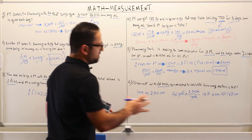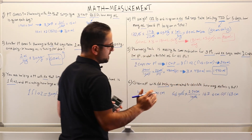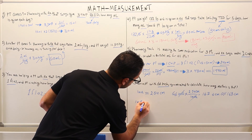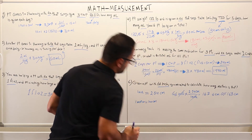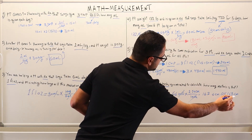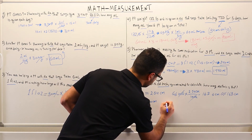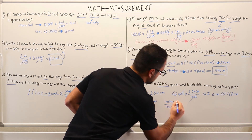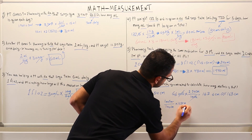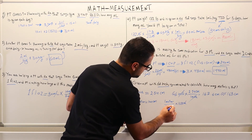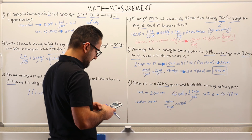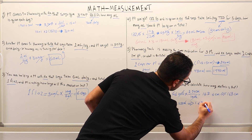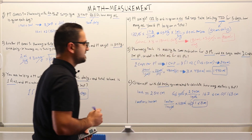The question is asking what 66 inches is in meters, and we now have 167.6 centimeters. We know that for every one meter there are 100 centimeters. So we multiply 168 centimeters by one meter over 100 centimeters. Centimeters cancel out, and 168 divided by 100 gives us 1.68 meters. That's the answer.